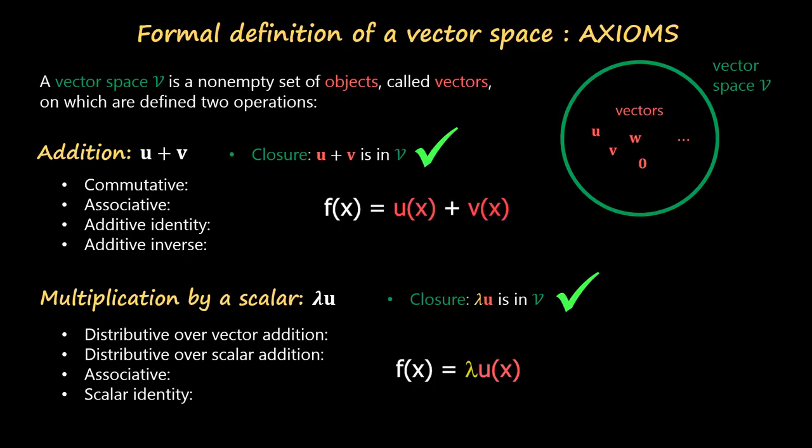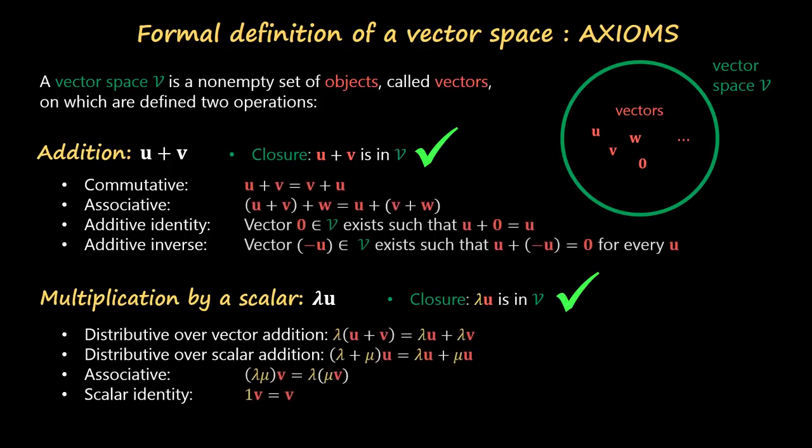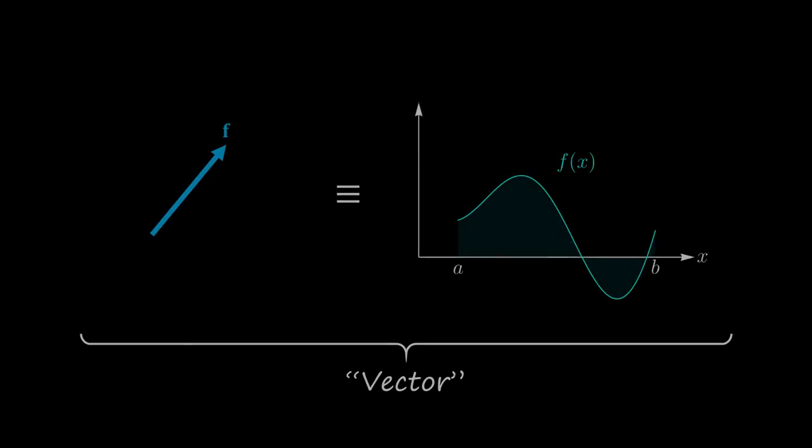Take a moment to realize that the sum and scalar multiplication of functions fulfill all of the required rules. And now think about what this means. It means that from a purely abstract point of view, functions f(x) are vectors. They are mathematically speaking the same as a geometrical vector.